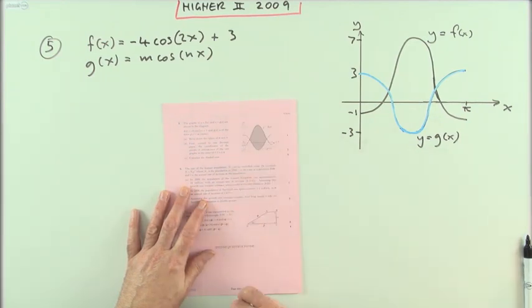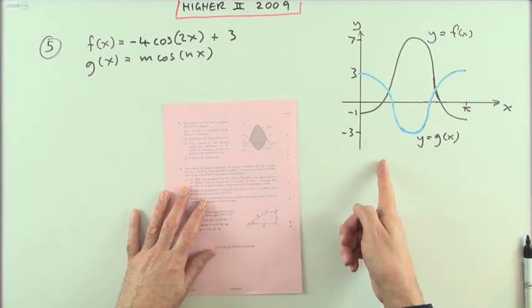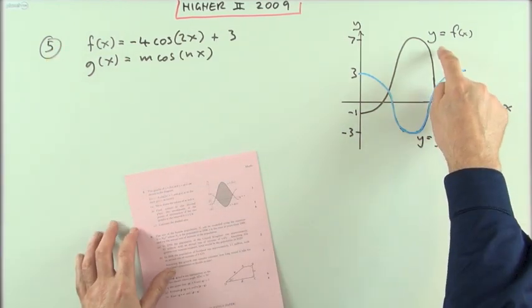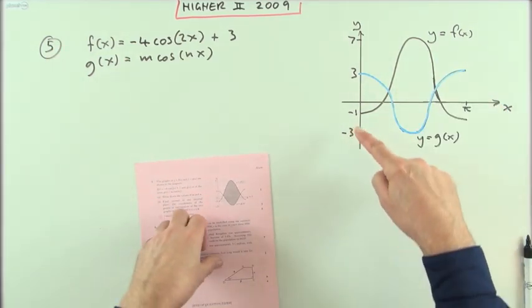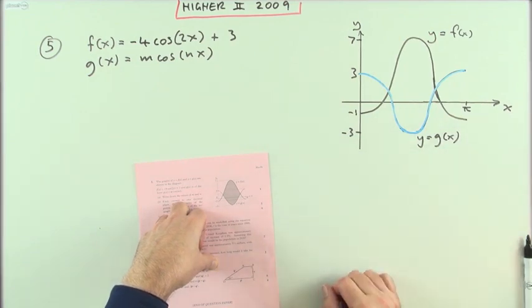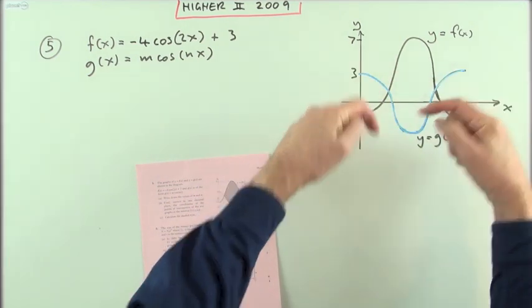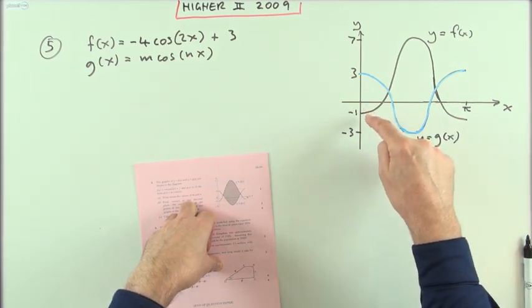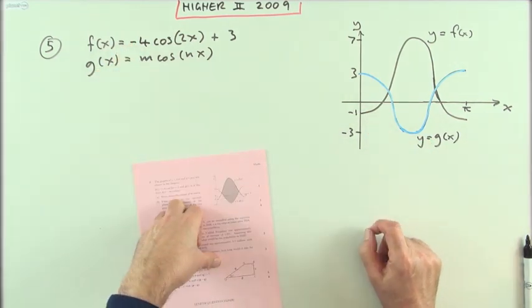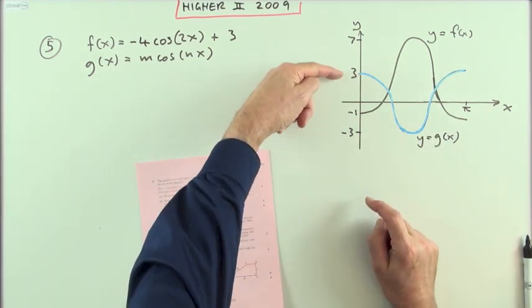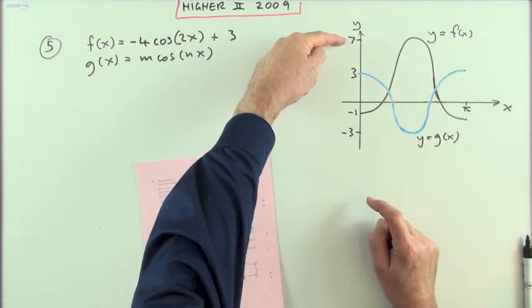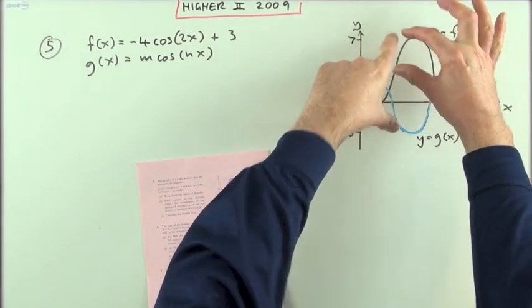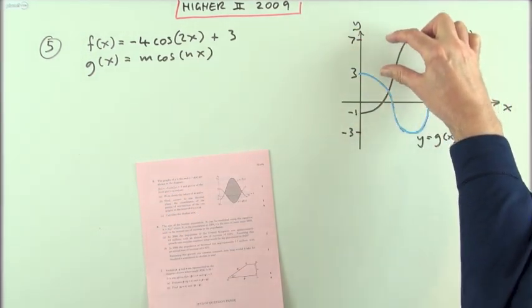Question five from the 2009 higher paper two. There are two trig graphs shown. The equation of the first one is given — you can see it's a cosine because it doesn't start in its middle; it starts at one of the extremities. It's starting down below, so it must be a negative cosine. Its amplitude isn't one; it goes from seven to negative one, a difference of eight, so the amplitude is half of that: four.